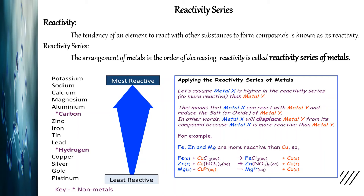Let us assume metal X is higher in the reactivity series, so it is more reactive than metal Y. This means metal X can react with metal Y and reduce the salt or oxide of metal Y — in other words, metal X will displace metal Y from its compound. For example, iron, zinc and magnesium are more reactive than copper, so iron will be able to displace copper from its copper chloride solution, and zinc will be able to displace copper from its copper nitrate solution.